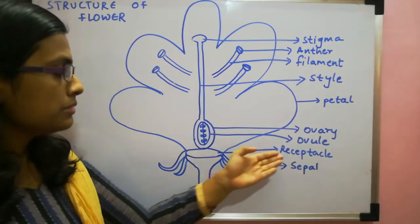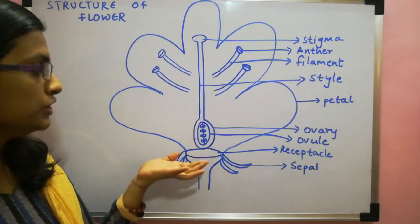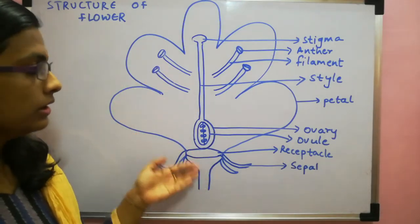Next is receptacle. Receptacle is the base of the flower on which the different parts of the flower sits.